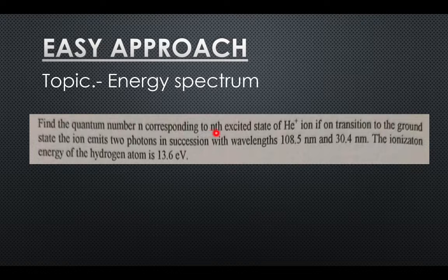The ion emits two photons in succession with wavelengths 108.5 nm and 30.4 nm. The ionization energy of the hydrogen atom is 13.6 eV.